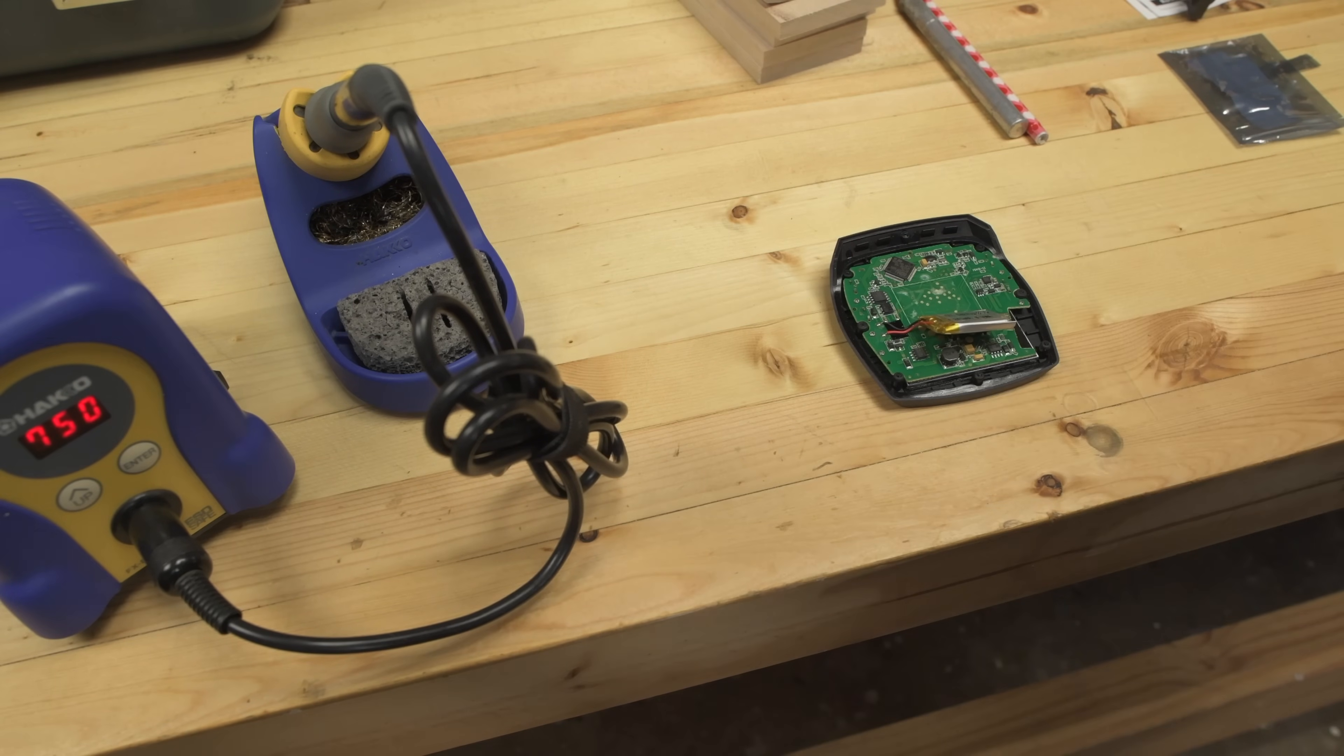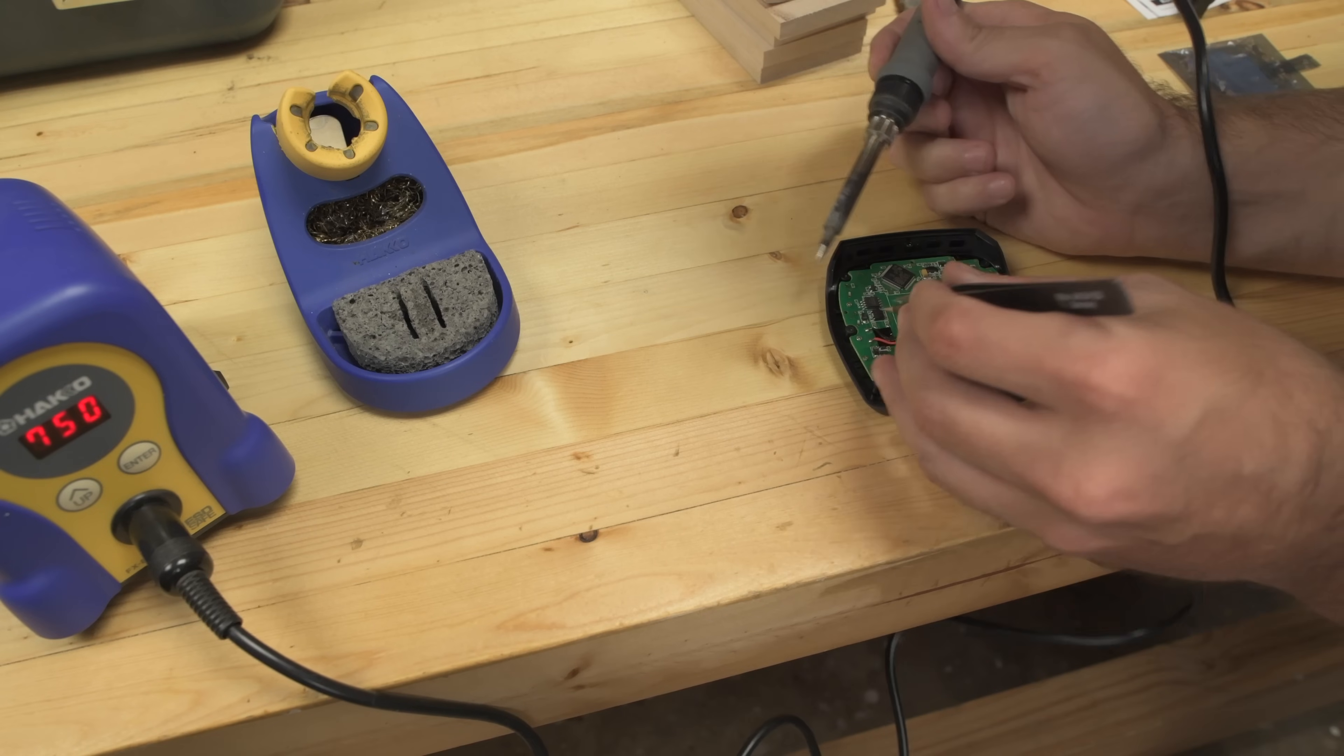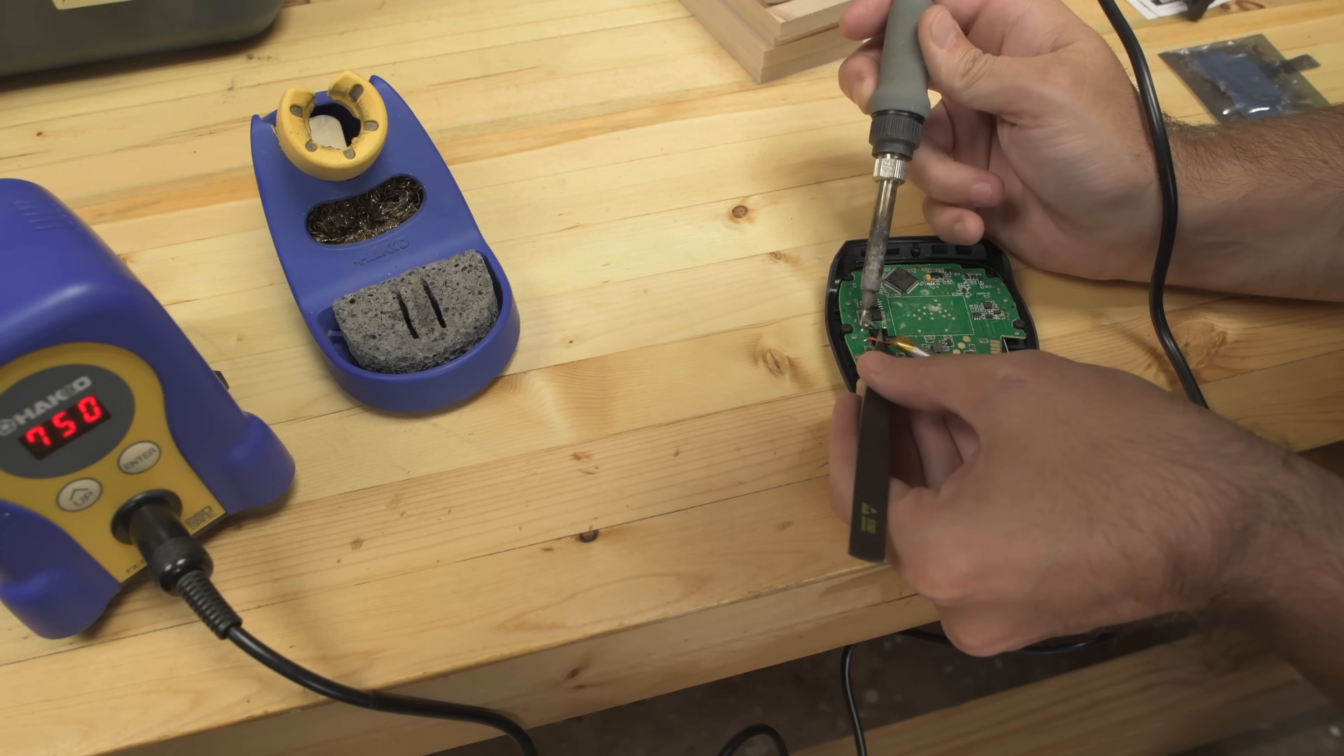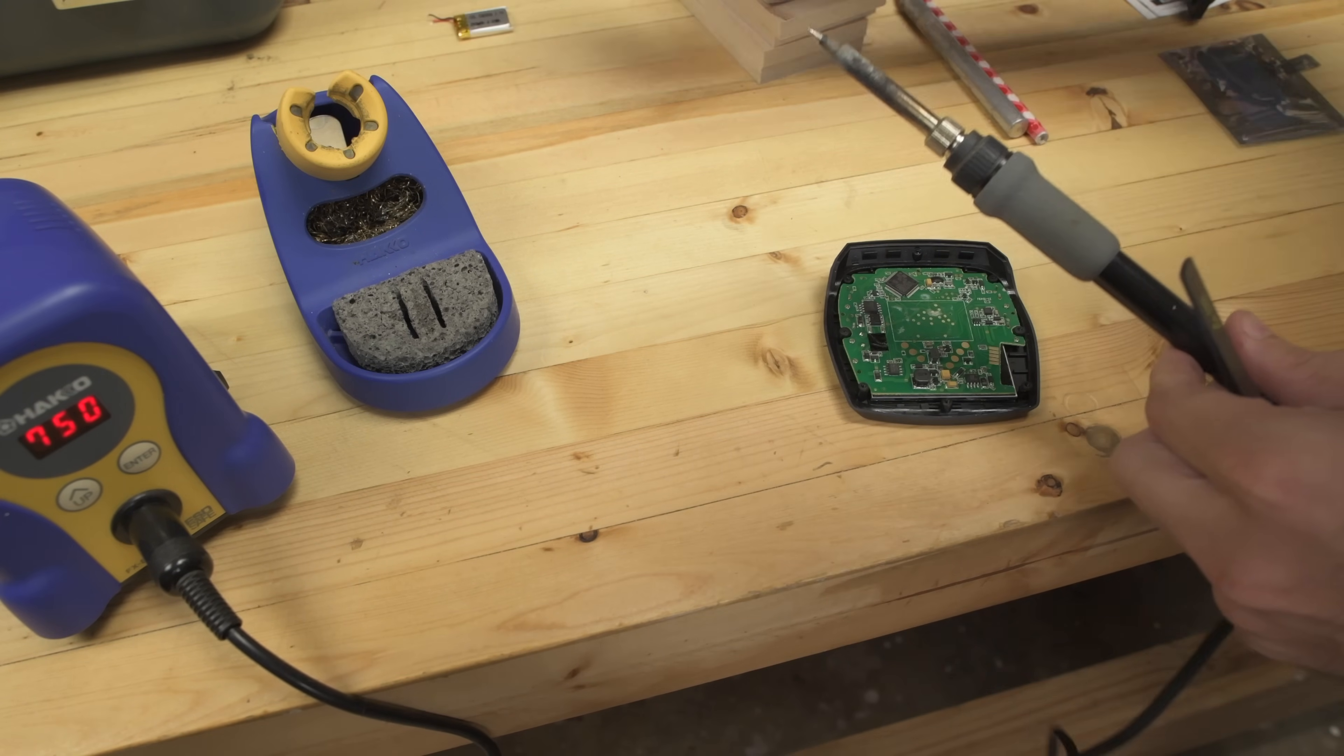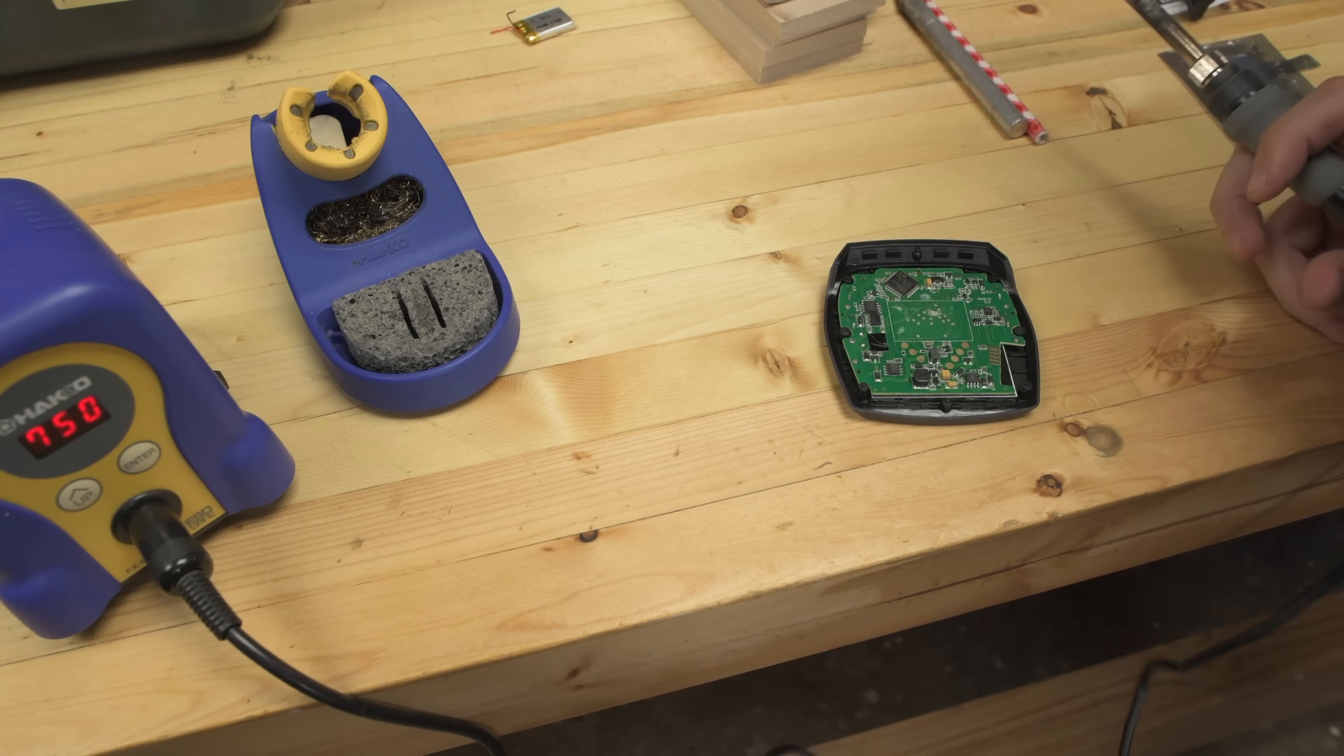First thing we're going to do is unsolder this, get it off. So I have heated up my iron here. Let me actually get some tweezers. It'll be a little easier. All right. So what I'm going to do is I'm just going to hold this wire with the tweezers and I'm going to heat up the blob of solder with the soldering iron and lift at the same time. It comes right off. Same thing here. Heat up, lift. Now, be careful not to let these leads touch because there's probably some residual charge in there and you don't want that to go off.